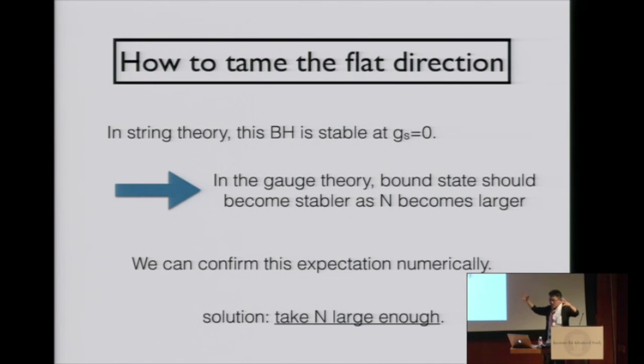We start from the bound state of eigenvalues. When n is small, it can collapse quickly. But as n increases, the lifetime of that bound state becomes longer and longer. When n is large, say 15 or 16, essentially during our simulation, we never see flat direction. So our solution here is just take n large enough.